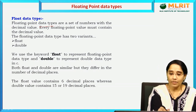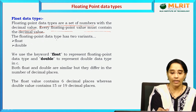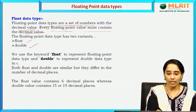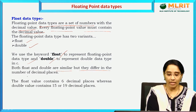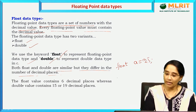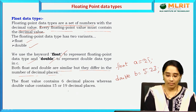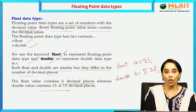Floating data types are a set of numbers with a decimal value. Every floating point value must contain a decimal value. The floating point data type has two variants: float and double. We use the keyword float to represent floating point values and double for the double data type. Both float and double are similar but differ in the number of decimal places — float contains 6 decimal places whereas double contains 15 to 19 decimal places.